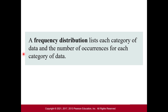A frequency distribution lists each category of data and the number of occurrences for each of those categories.